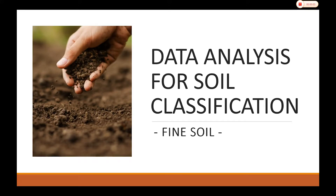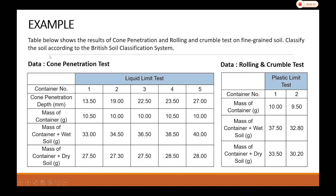This video describes the data analysis for fine soil classification. The table shown gives results of cone penetration and rolling and crumble tests on fine grain soil. We need to classify the soil according to the British Soil Classification System. There are two sets of data: the first from the cone penetration test, and the other from the rolling and crumble test. The cone penetration test objective is to get the liquid limit.